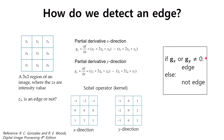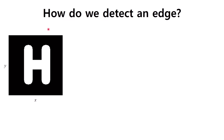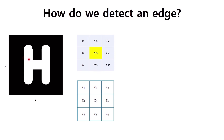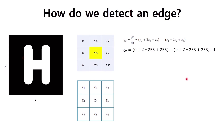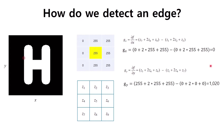then the center pixel z5 is an edge. But if the partial derivative in x or in y direction is zero, then the pixel z5 is not an edge. Here is an example calculation using the image of letter H. Let us take a 3x3 region from this image and calculate the partial derivative in the x direction and in the y direction.